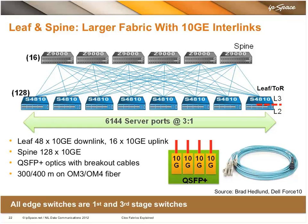Here we're going to configure it in a different way. Instead of 4 ports of 40 gig, we also have the option of using 16 ports of 10 gig as the uplink out of the leaf switch. We can do that without making any changes to hardware other than deploying what you see here in the lower right corner, which is a breakout cable.